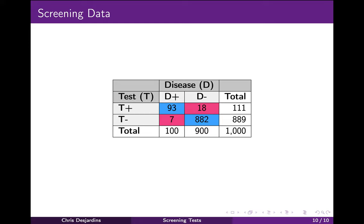Now that we have the table filled in, it is straightforward to calculate the positive predictive value of this test. Of the 111 people who tested positive, 93 really had the disease and 18 were false positives. So the PPV is 93 divided by 111, or 83.8%. The test sensitivity and specificity were both high, and the prevalence was comparatively high at 10%, so the positive predictive value of this test is decent — nearly 84% of the people who test positive really had the disease.